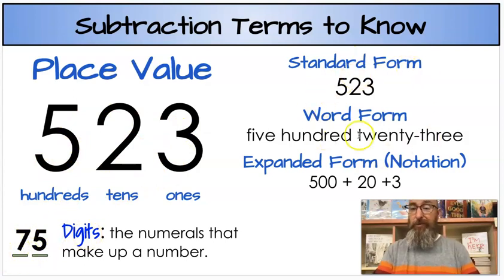We can write numbers three different ways. Our standard form which is how we always write it. Word form 523. And if we do expanded notation, 500 plus 20 plus 3, because 5 hundreds makes 500, 2 tens makes 20, 3 ones makes 3.